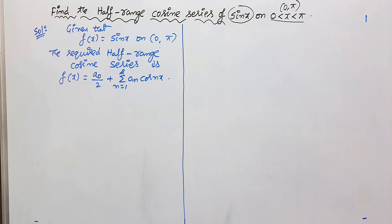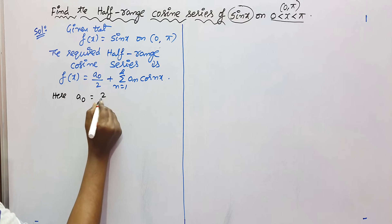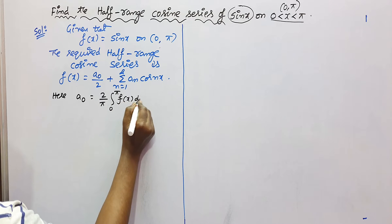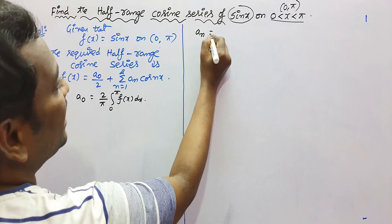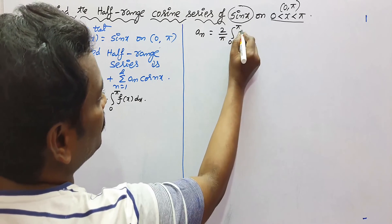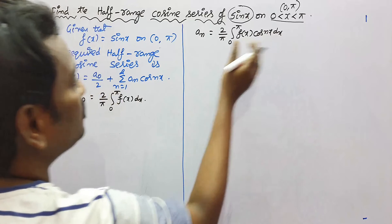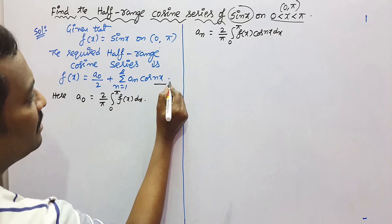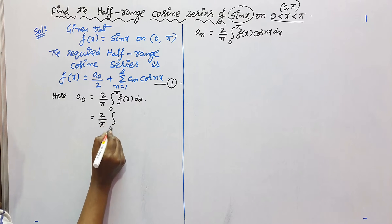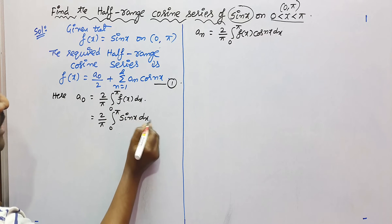The formula for a0 is: a0 = (2/π)·∫₀^π f(x) dx. And the formula for an is: an = (2/π)·∫₀^π f(x)·cos(nx) dx. After finding both values, we replace them in the cosine series formula. So for a0: (2/π)·∫₀^π sin(x) dx.